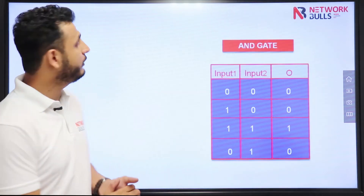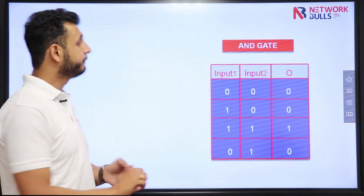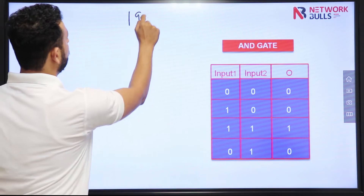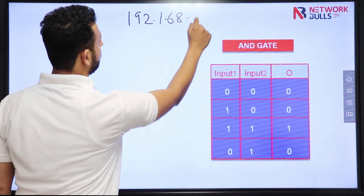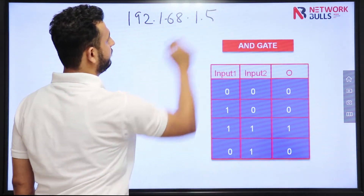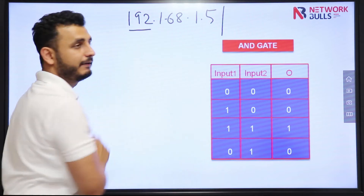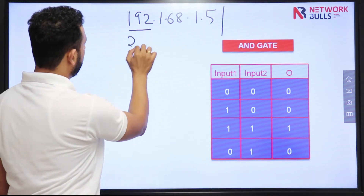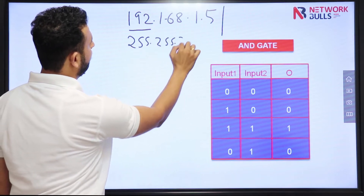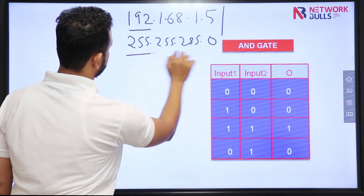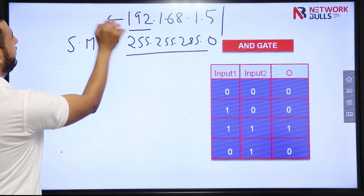Let me start with a basic example. Let's say I have an IP 192.168.1.5, and as it is Class C, the subnet mask will be 255.255.255.0.